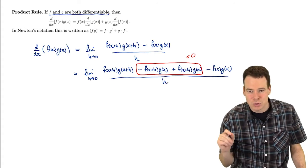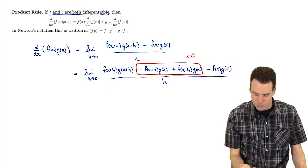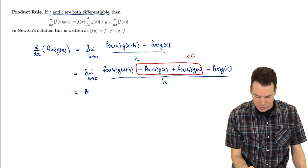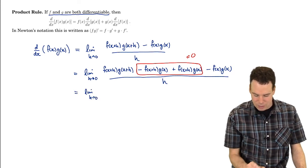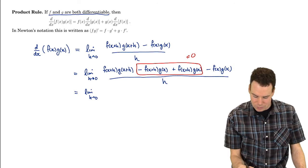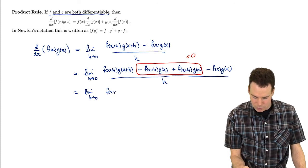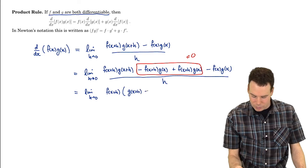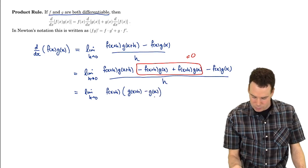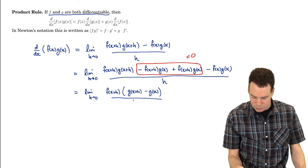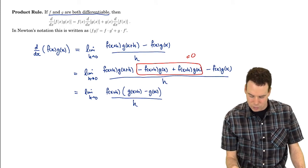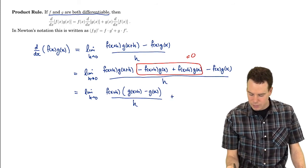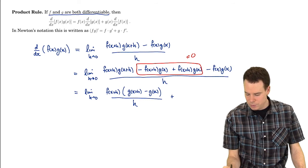I've added zero in a strategic way. What was my strategy behind doing this? It was to look at those first two terms and say well they have an x+h in common, so I can factor them out and divide h into the first term there. Similarly I have for the second two terms, I have this g(x) in common.